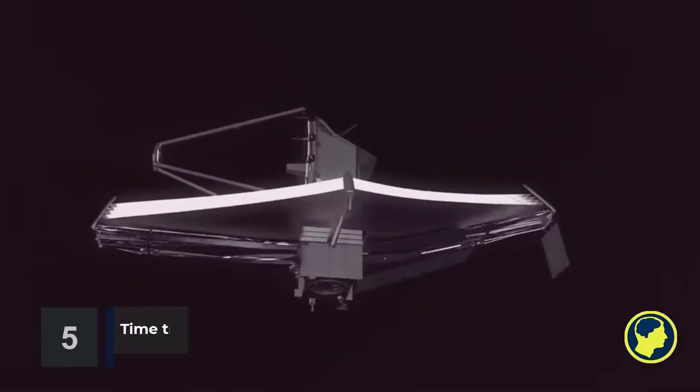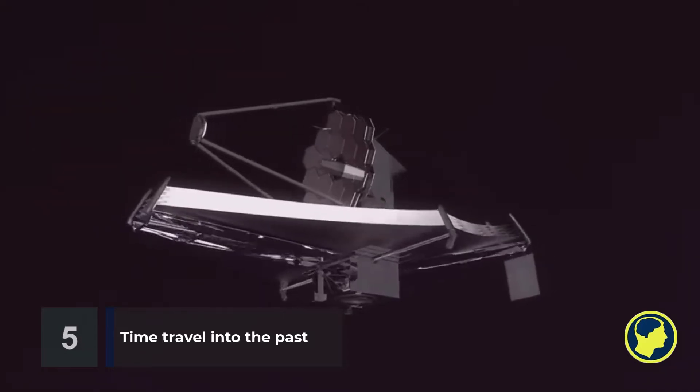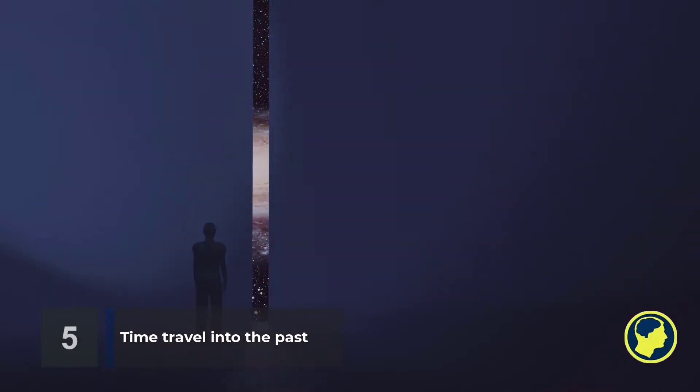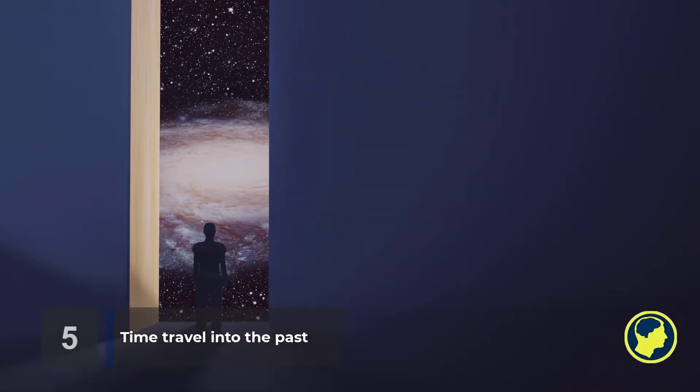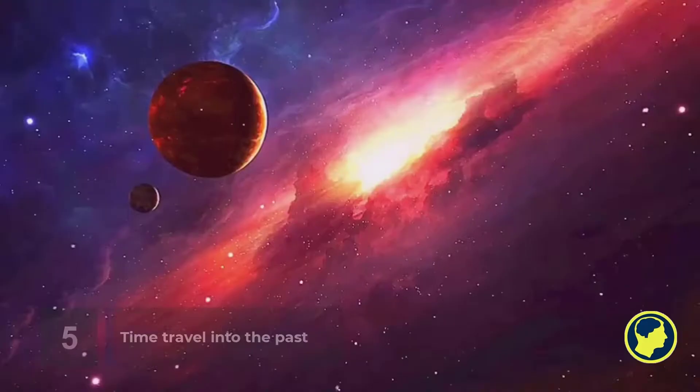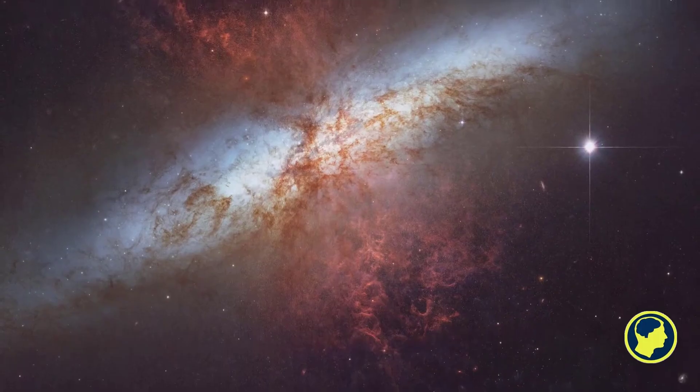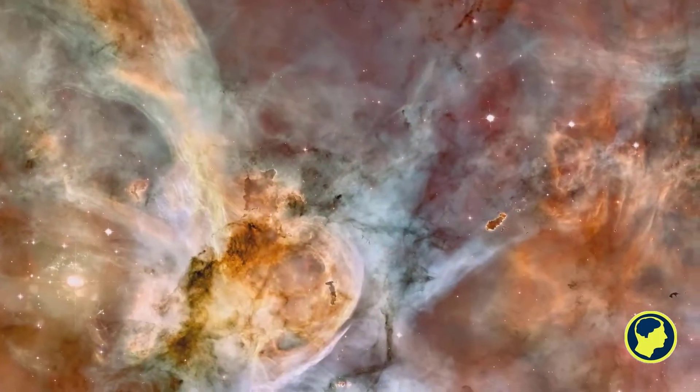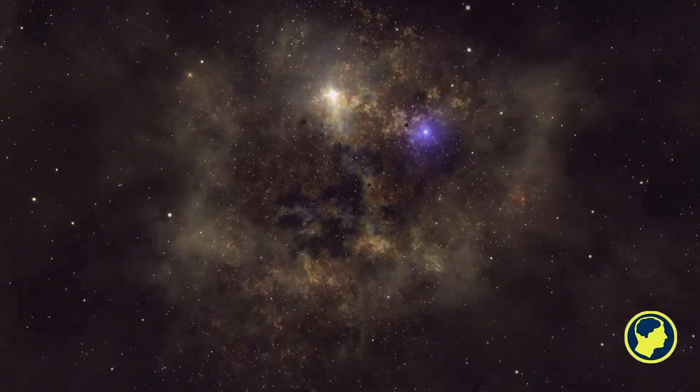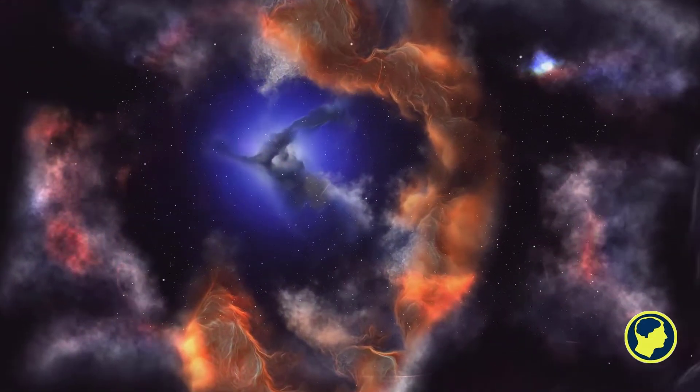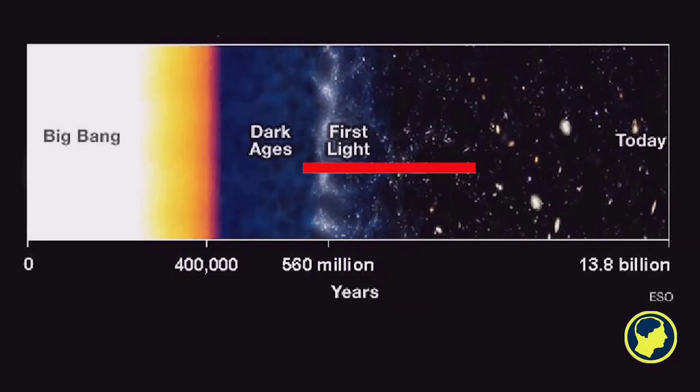Number 5: Time Travel into the Past. The telescope will show us what the universe was like 100 to 250 million years after its birth. According to the Big Bang Theory, it is believed that the universe came into existence some 13.8 billion years ago. The James Webb Space Telescope will detect stars and galaxies 13.6 billion light years away.